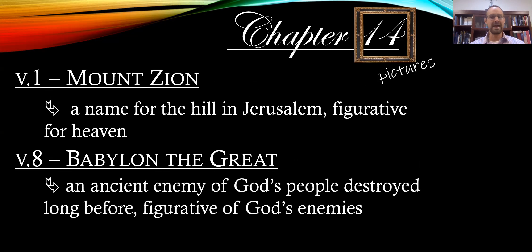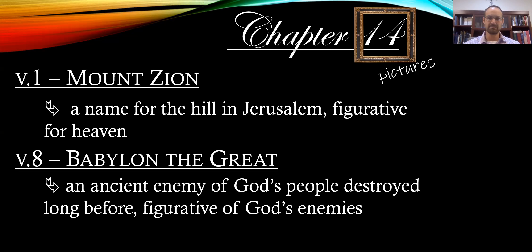In verse 8, there's Babylon the Great. Babylon was the ancient enemy of God's people in Old Testament times. They were the nation that came up and around the desert, destroyed Jerusalem, knocked down the walls, burned down the temple, and took the people into exile. Ever since then, Babylon represents the enemy of the Christian church. By the day of John, Babylon as a nation and as a people really didn't exist anymore, and they don't exist today.